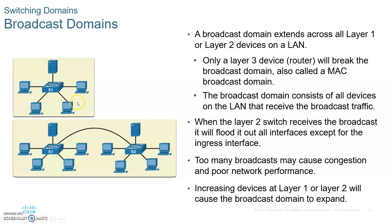The whole switch, however, is one broadcast domain. A broadcast domain means that when you send a frame with a broadcast destination MAC address — all 48 ones — the switch grabs it and floods all ports. Everyone attached to the switch receives a broadcast frame. So remember: a broadcast domain equals a LAN, a local area network. A switch is one broadcast domain but has multiple collision domains. With full-duplex on each port, there are no collisions — just one big broadcast domain.